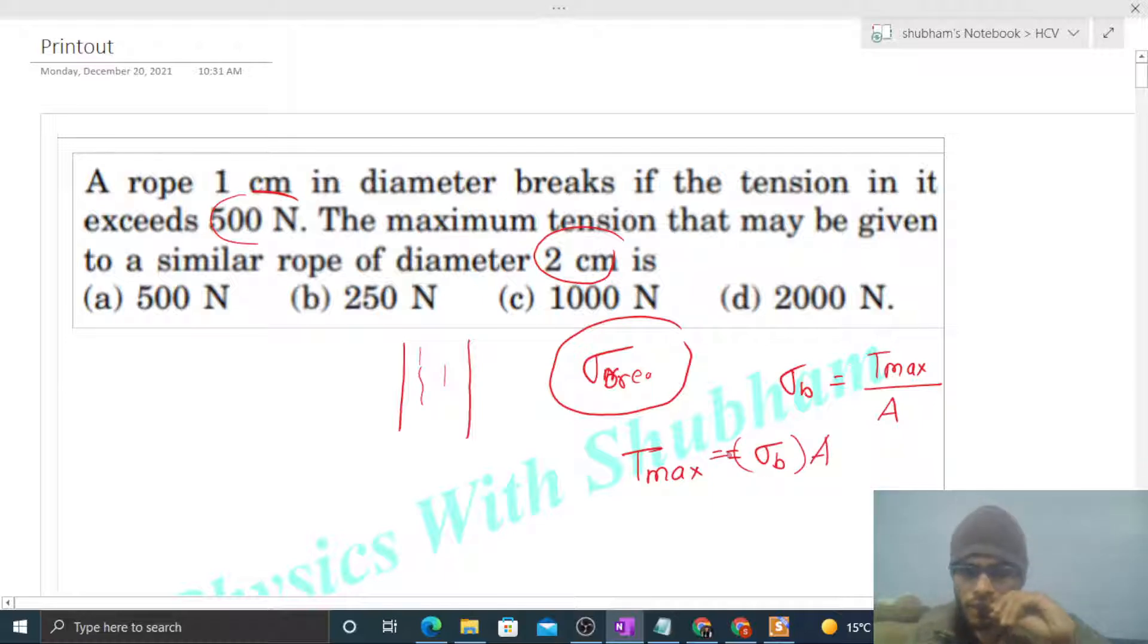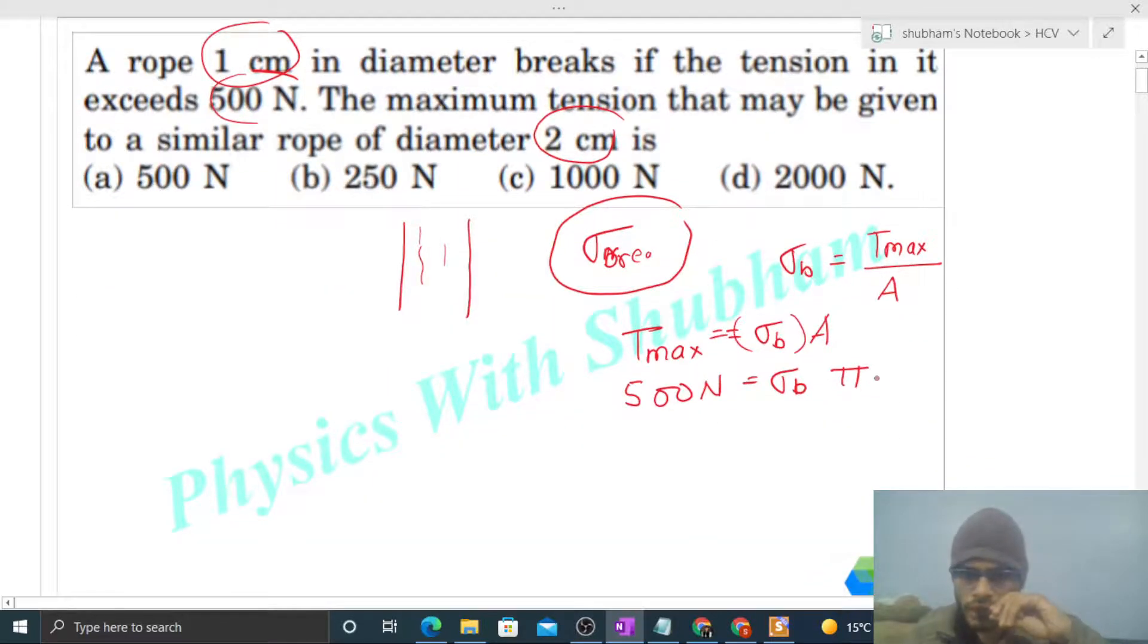So here we discuss case 1. The maximum tension given is 500 Newton, which equals breaking stress times cross-sectional area. That will be π d squared by 4, so π times 1 squared divided by 4.